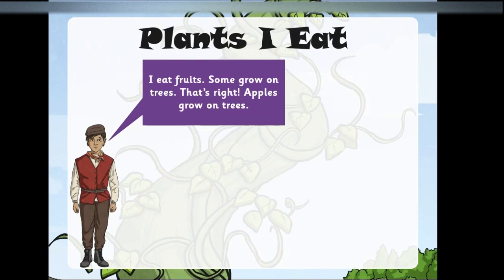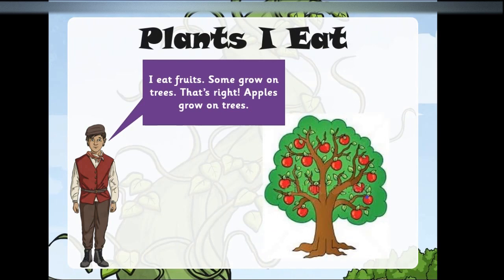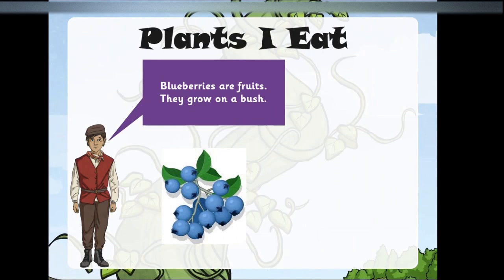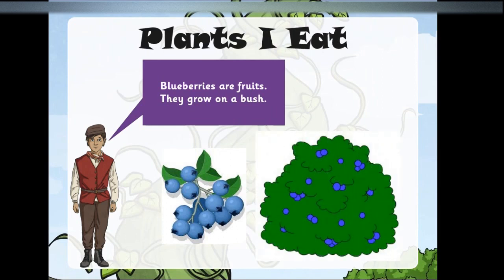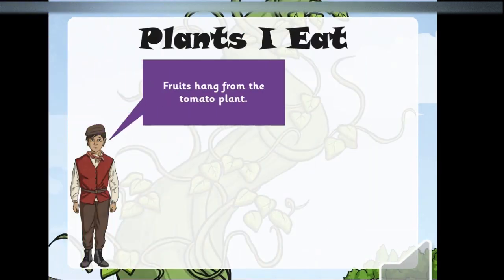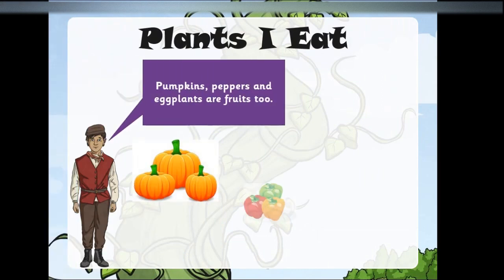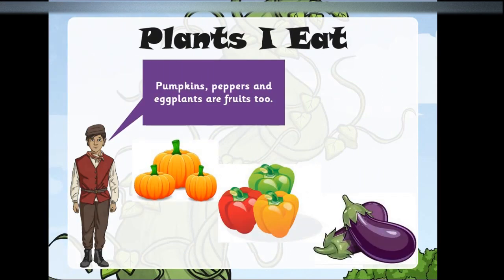I eat fruits. Some grow on trees — that's right, apples grow on trees. Blueberries are fruits; they grow on a bush. Fruits hang from the tomato plant. Pumpkins, peppers, and eggplants are fruits too.